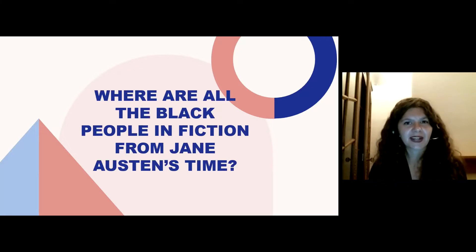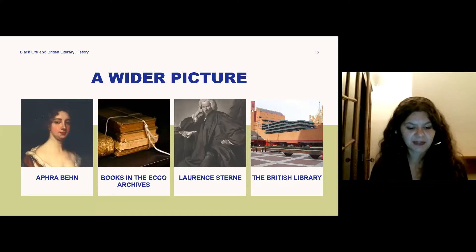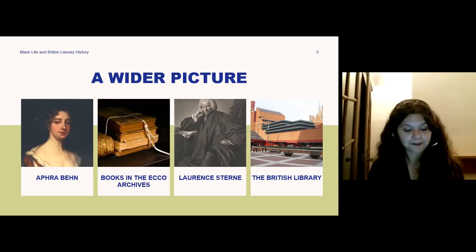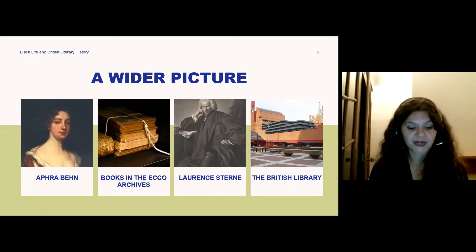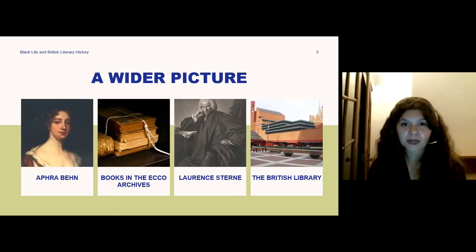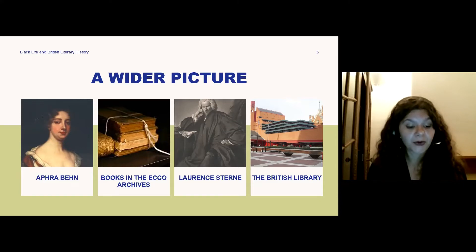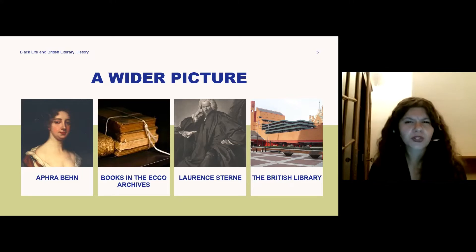We're thinking about a novel written by the figure on the very left of our screen, a woman named Aphra Behn. Behn was quite a fascinating literary character in her own right. She wrote plays, poetry, and prose during the Restoration period, when King Charles II returned from exile in continental Europe to restore the authority of the British monarchy. In addition to her writing, Behn was also a spy for King Charles in Antwerp in the 1660s, and was forced to return to London at a time when the novel, as the literary form we recognize today, was just starting to be formed.